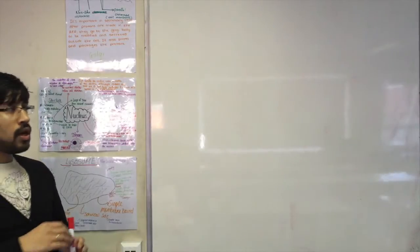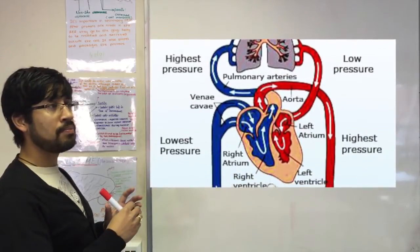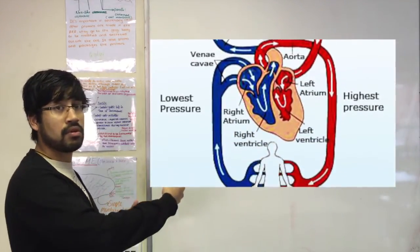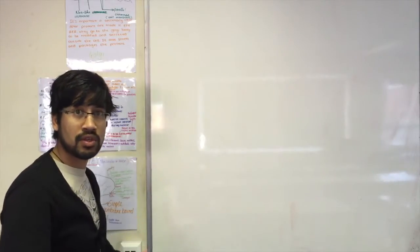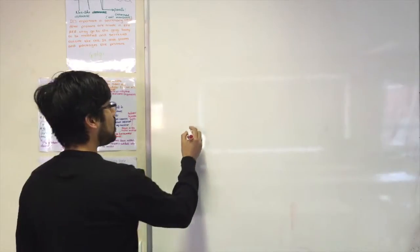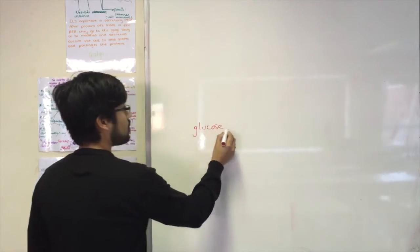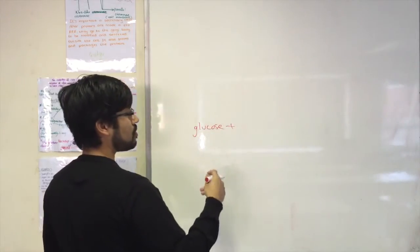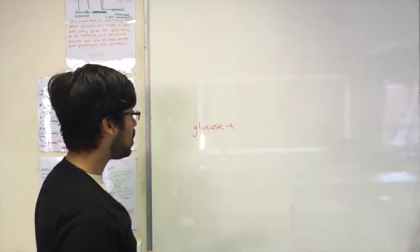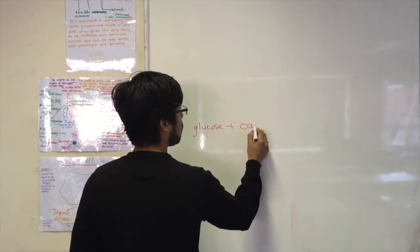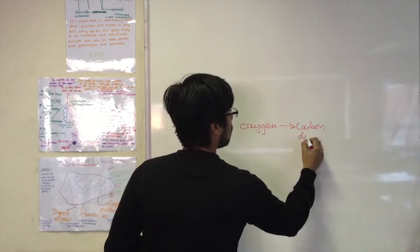You know that the main function of the circulatory system is to transport oxygen from the lungs to the heart and then to all the other tissues. What's not really stated very obviously is that in the background, the reason the circulatory system has to transport oxygen and carbon dioxide primarily is because of cellular respiration.